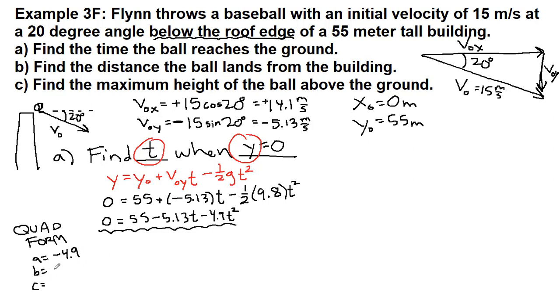a is the thing attached to t squared—that's minus 4.9. b is the thing attached to t—that's minus 5.13. And c is the thing all by itself—positive 55. Everything has to be on the same side of the equation. Negative b plus or minus the square root of b squared minus 4ac, all over 2a. Let's plug in some numbers.